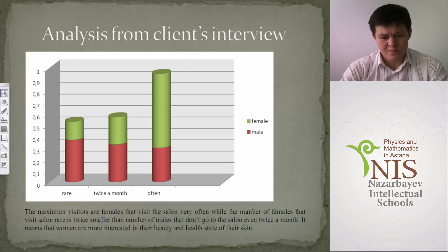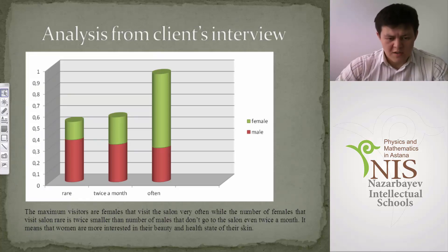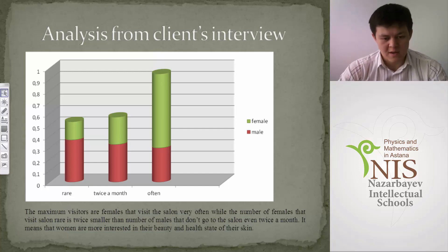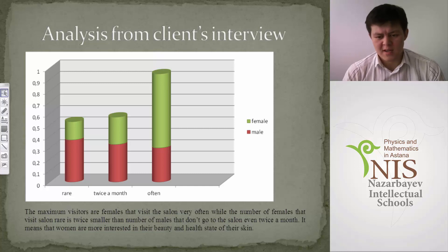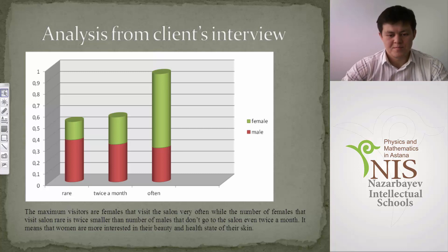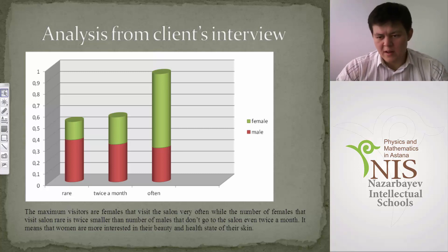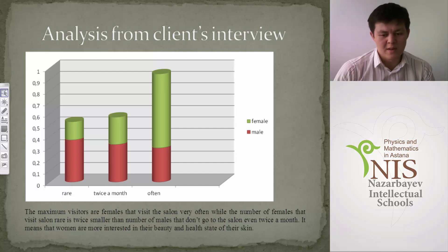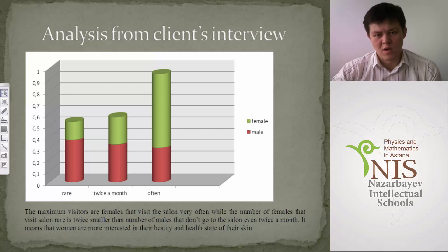The analysis from the client interview showed that the client ran a beauty salon. The maximum visitors are female — they visit the salon very often — while the number of males that visit is roughly twice smaller. She made decisions visualizing this: females in green, males in red. This data was taken from the interview with the client — one possible analysis approach.